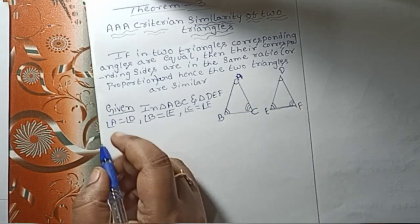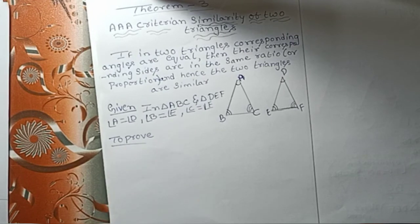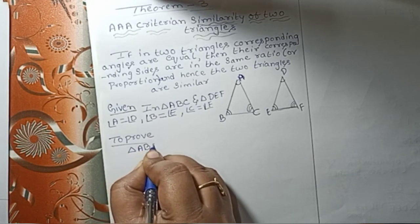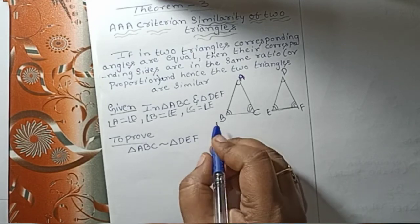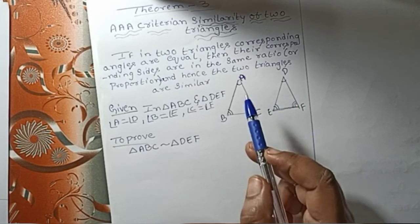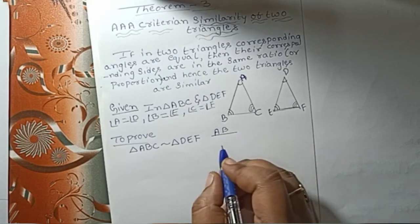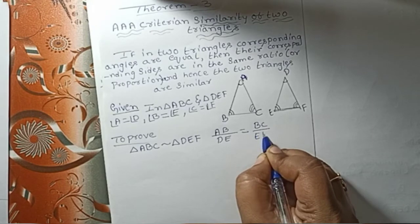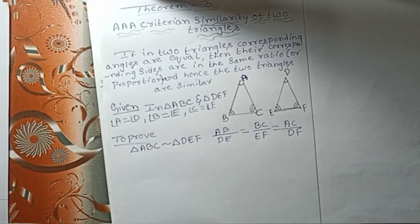To prove: triangle ABC is similar to triangle DEF, and that AB divided by DE is equal to BC divided by EF, which is equal to AC divided by DF.